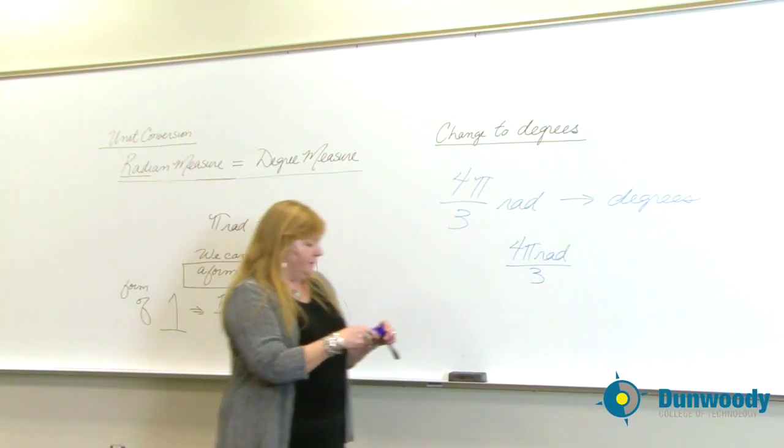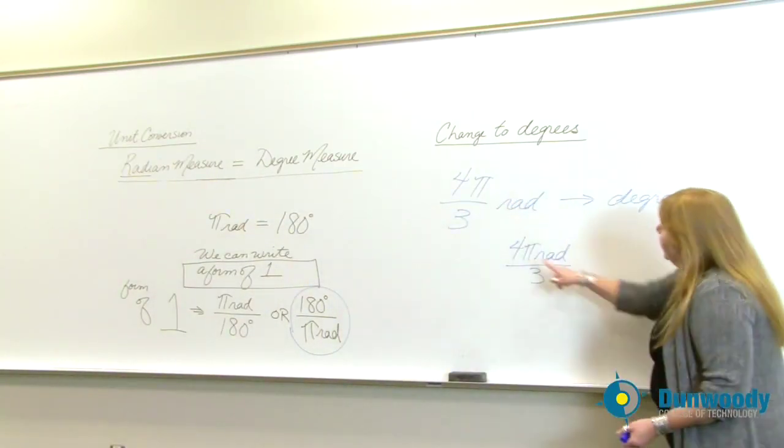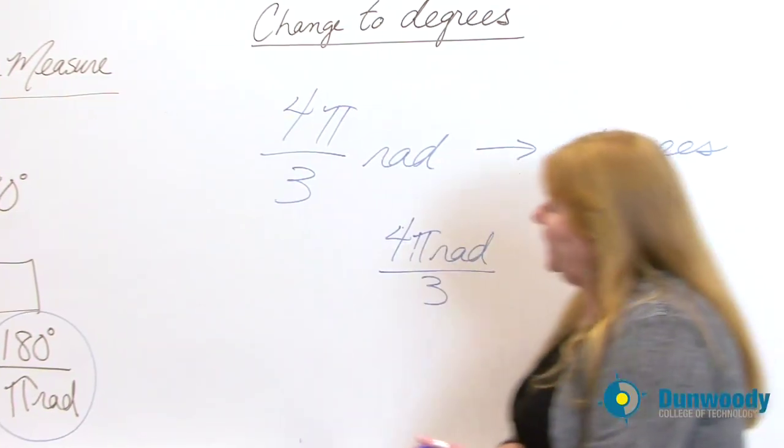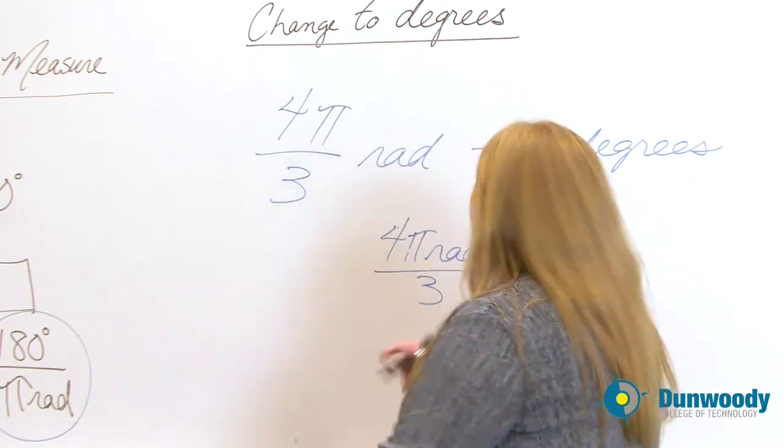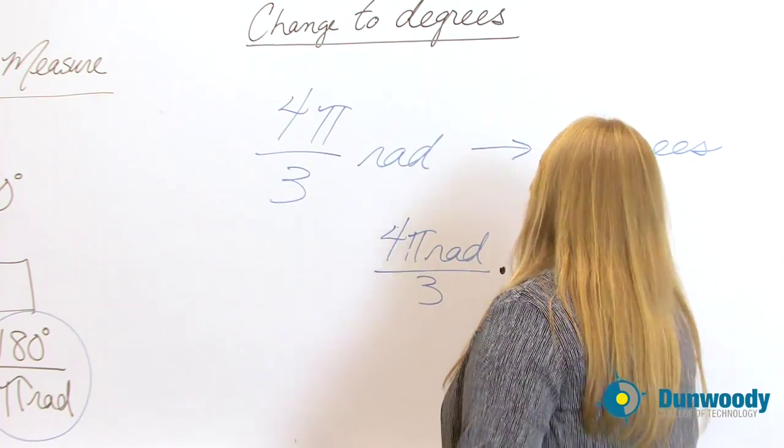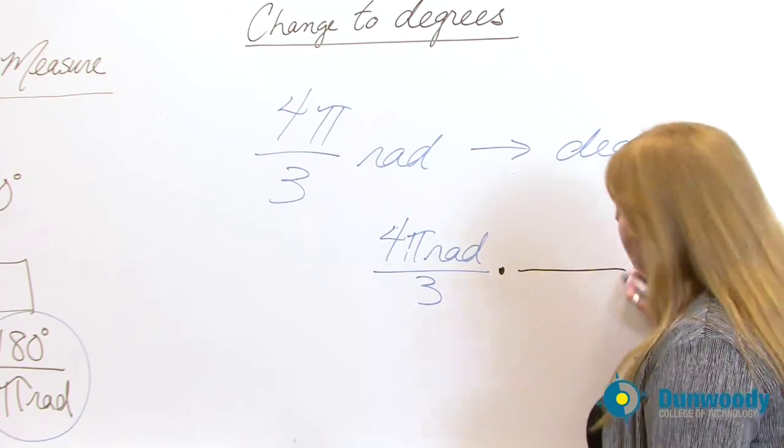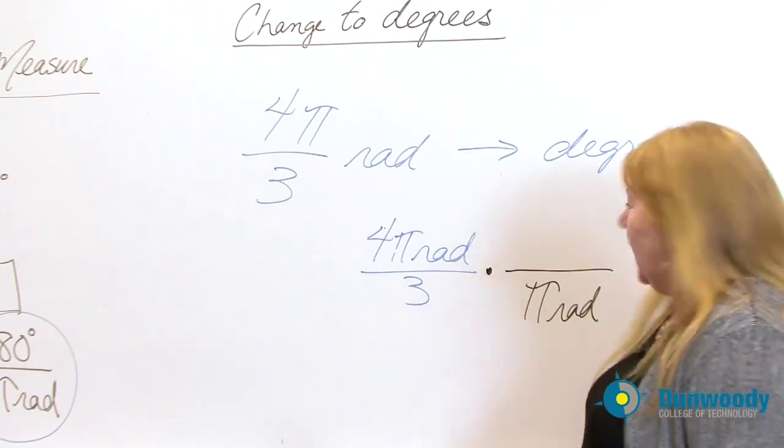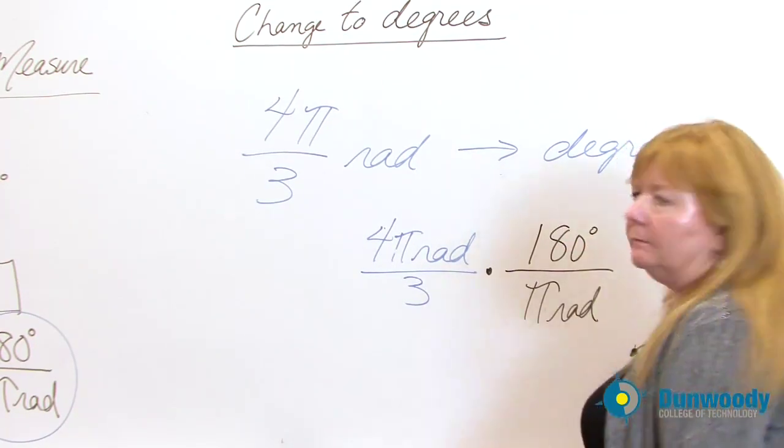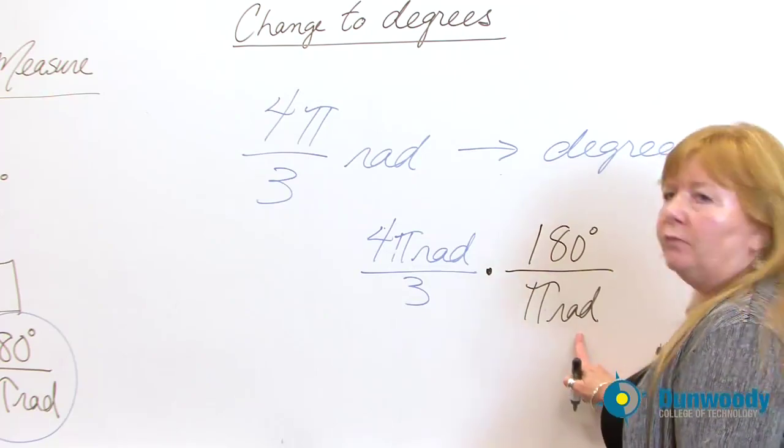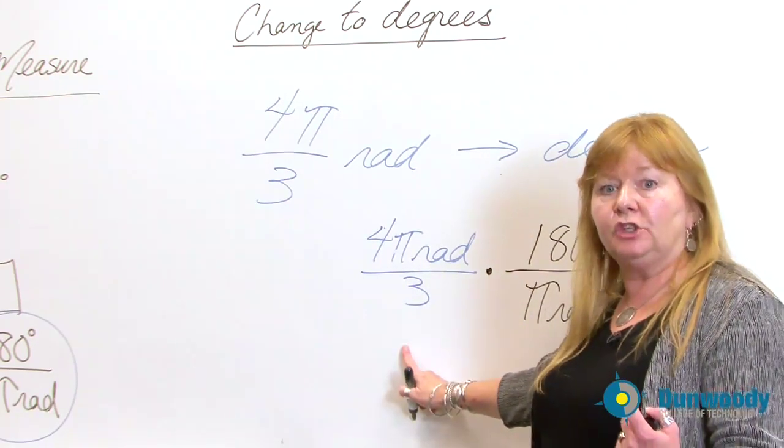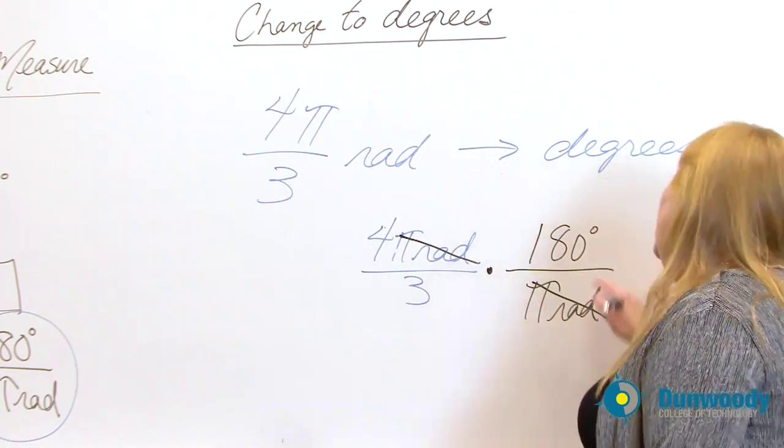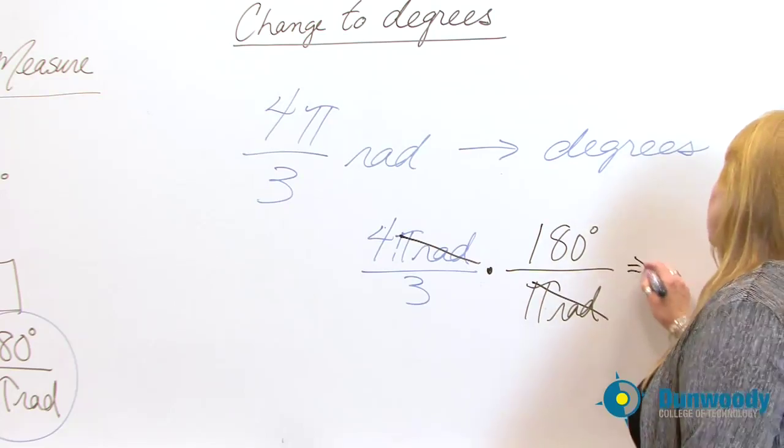And now I want to multiply this by a form of 1 that gets rid of the π radian measure and brings degrees in. So again, I will be using this to help me. Because π radian is in the numerator, I have to make sure that my form of 1 has it in the denominator so it will cancel. And up here is where your 180 degrees will be. This is your form of 1 and 1 times anything is just that number. It just so happens this form of 1 does a very nice job of getting rid of the radian measure. And now you can see what's left is degree measure.